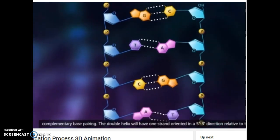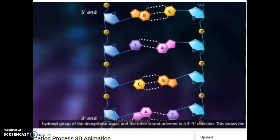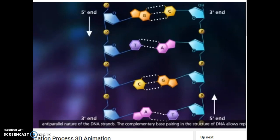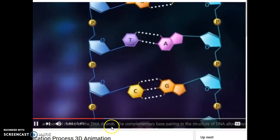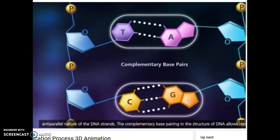The double helix will have one strand oriented in a five prime to three prime direction relative to the hydroxyl group of the deoxyribose sugar, and the other strand oriented in a three prime to five prime direction. This shows the anti-parallel nature of the DNA strands. That means one strand points up, the other side points down.